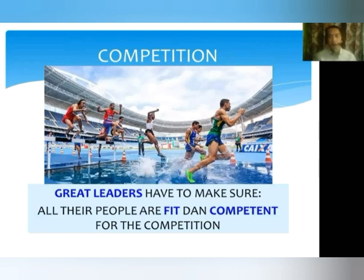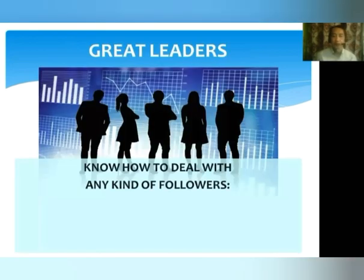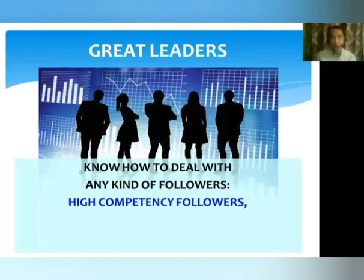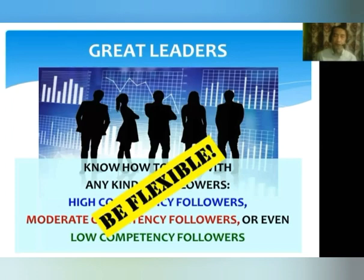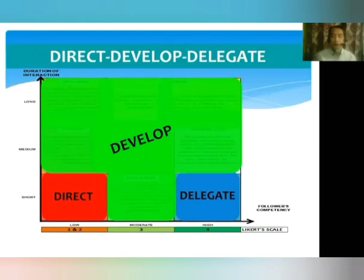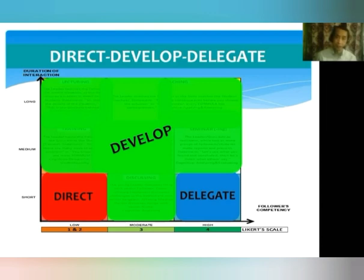For competition, team leaders have to make sure that all their people are fit and competent for the competition. Team leaders know how to deal with any kind of followers: the high-competency followers, the moderate-competency followers, and the low-competency followers. They have to be addressed. This is a diagram which I would like you to see and check out. There are three kinds of process, basically in general.